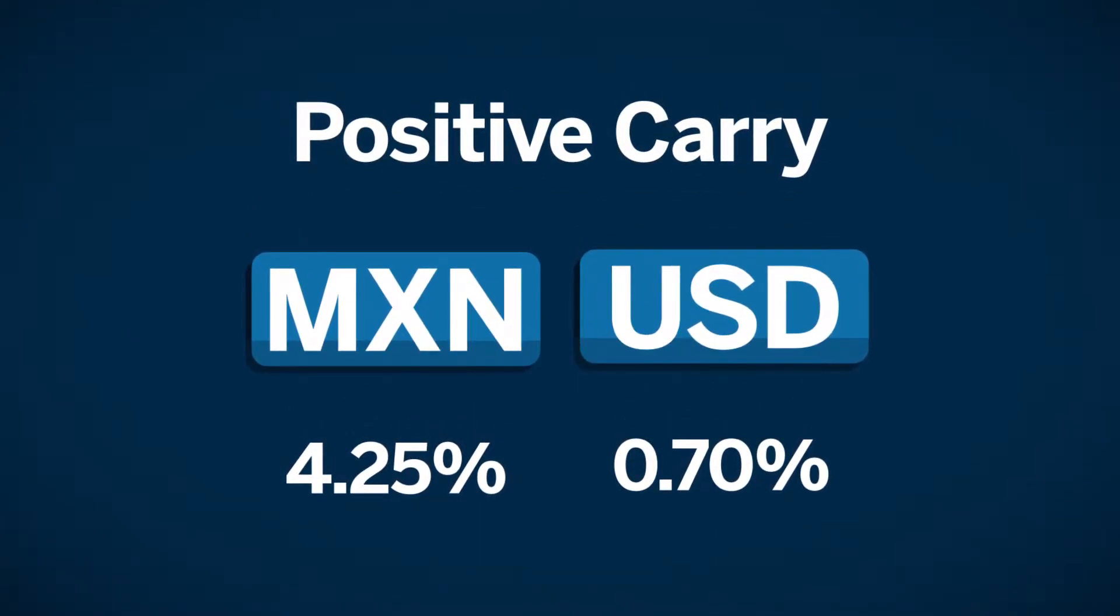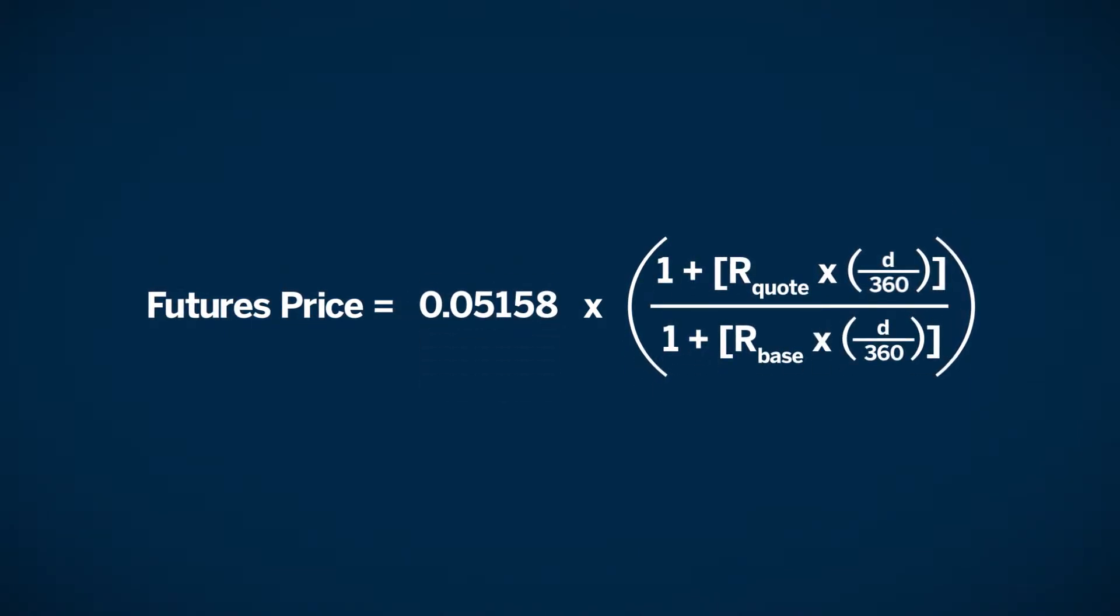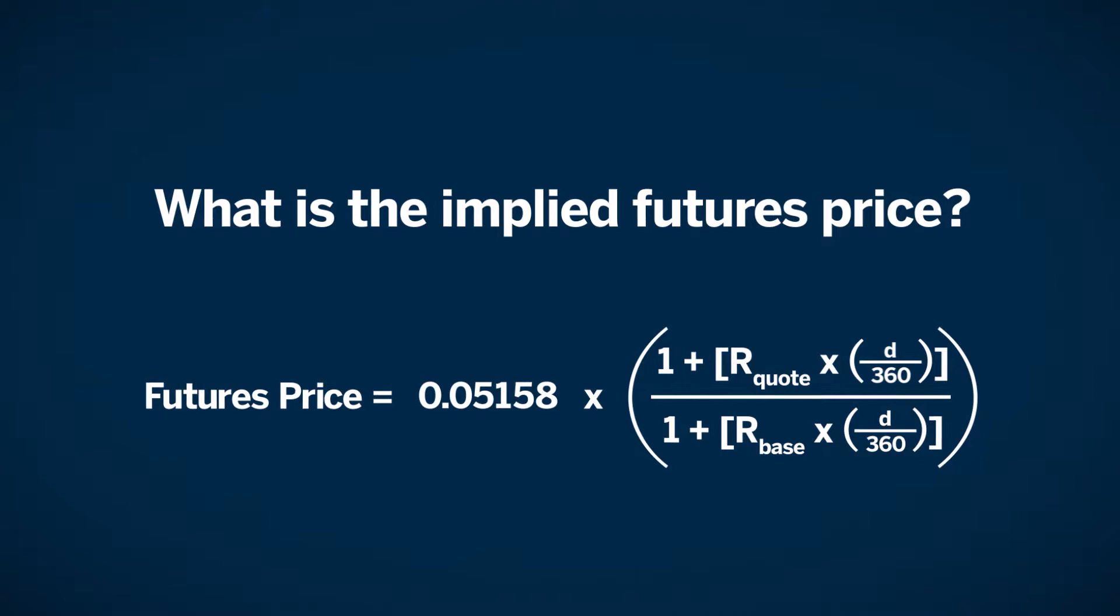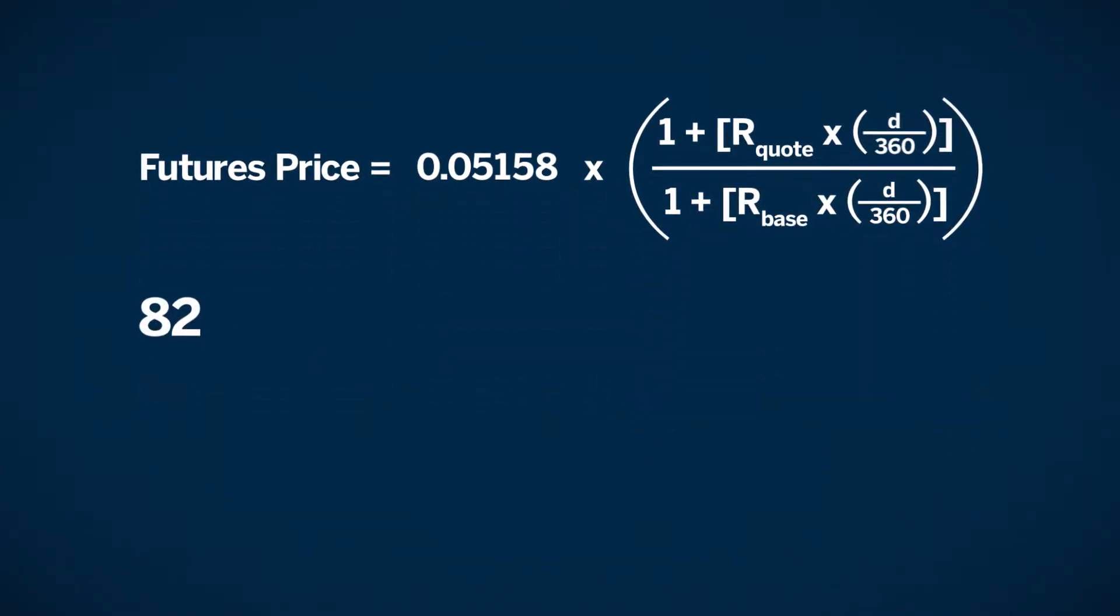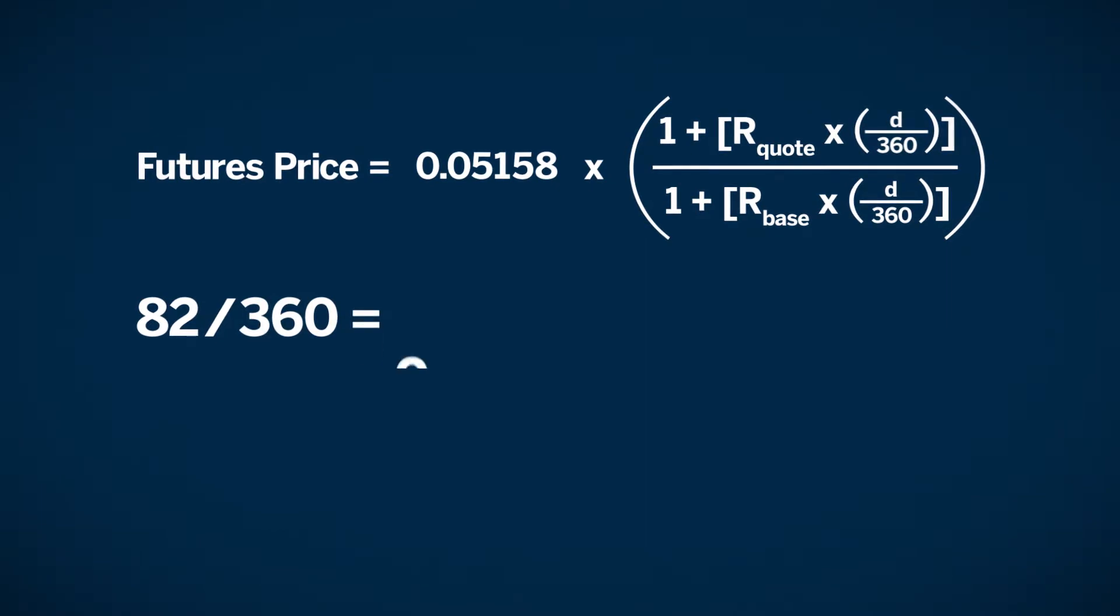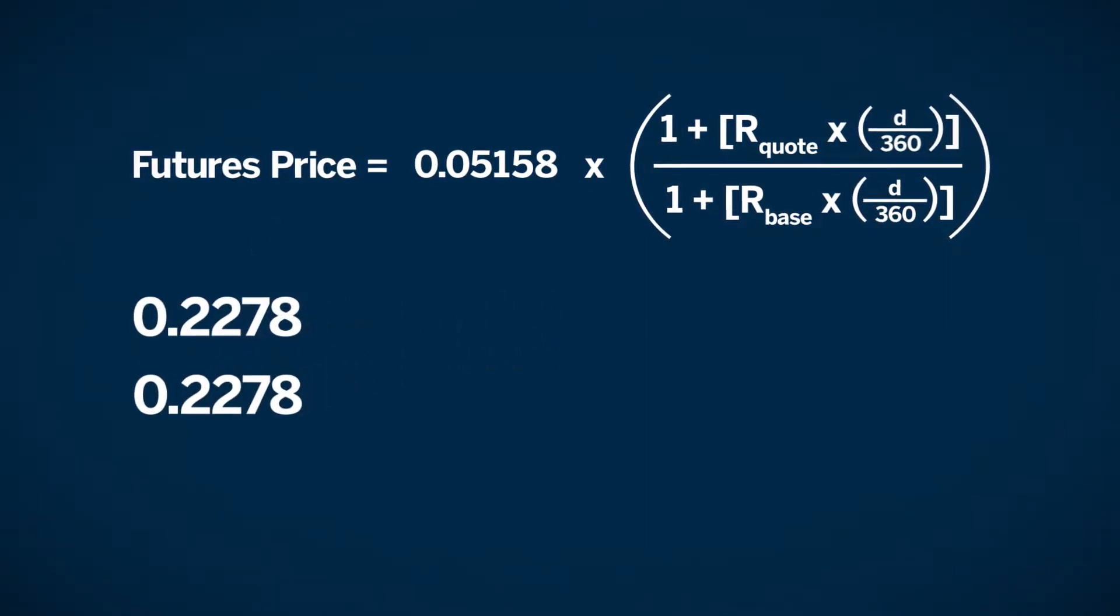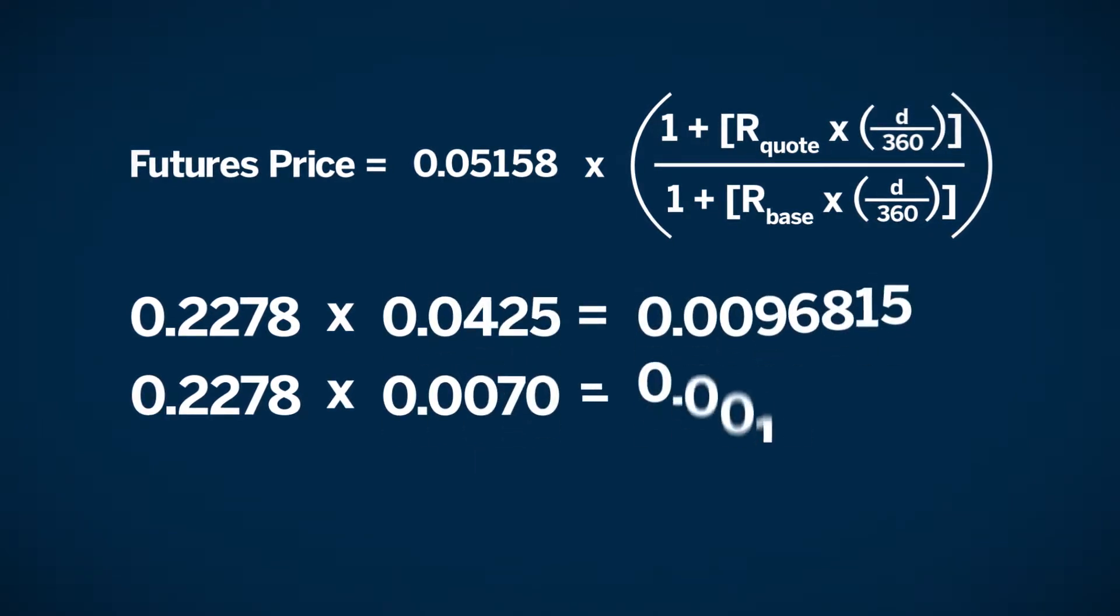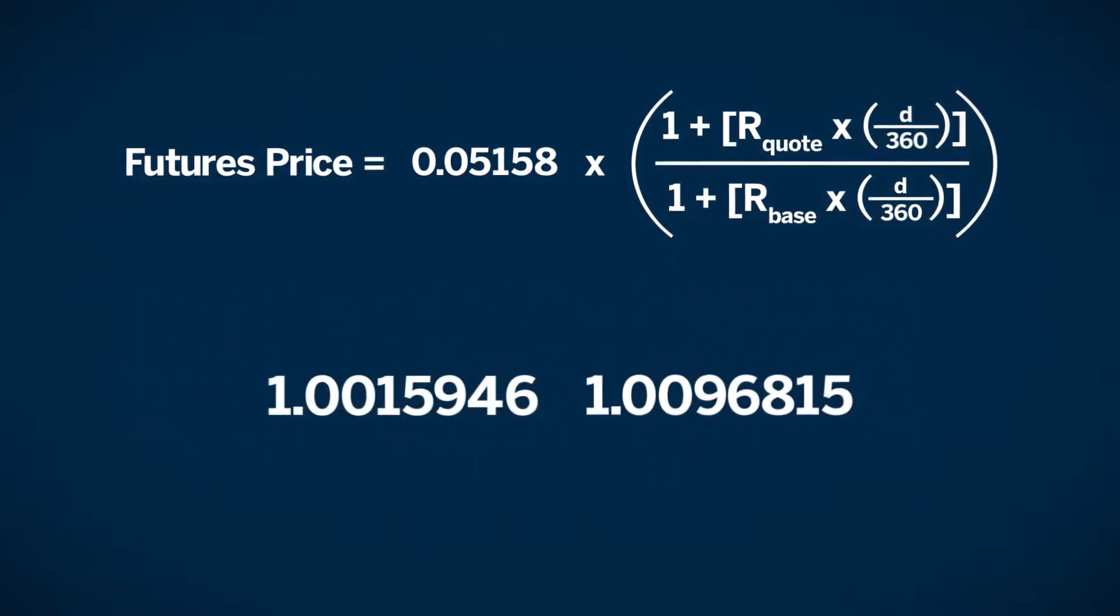So the futures price should be lower than the spot. If the spot price for Mexican peso versus U.S. dollar is 0.05158, what would be the implied futures price? Let's plug in our numbers to find the results. First, 82 days divided by 360 equals 0.2278. Now, multiply that number by each currency's short-term interest rate. Add 1 to each result and then divide the base number into the terms number.